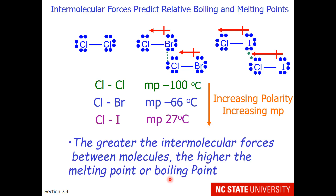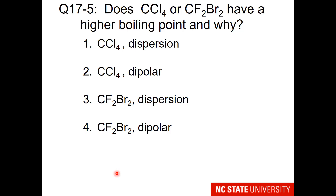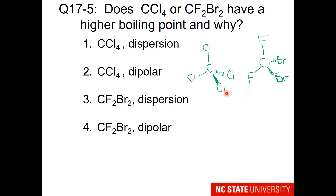Please remember, the greater the intermolecular forces between molecules, the higher the melting or boiling point. So here is your student question: does carbon tetrachloride or carbon with two fluorines and two bromines have a higher boiling point, and why? It's important to recognize the three-dimensional nature of these molecules, so list the forces underneath them, deciding if they have dispersion, dipolar, and hydrogen-bonding forces.